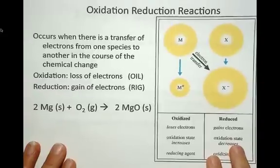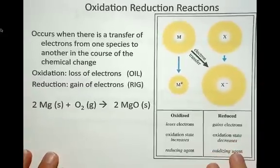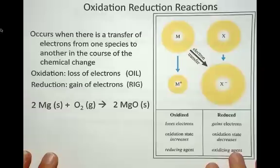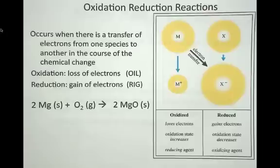We call this type of electron transfer oxidation-reduction reactions. Anytime we have an electron transfer, we would consider that type of chemical change to be an oxidation-reduction reaction.